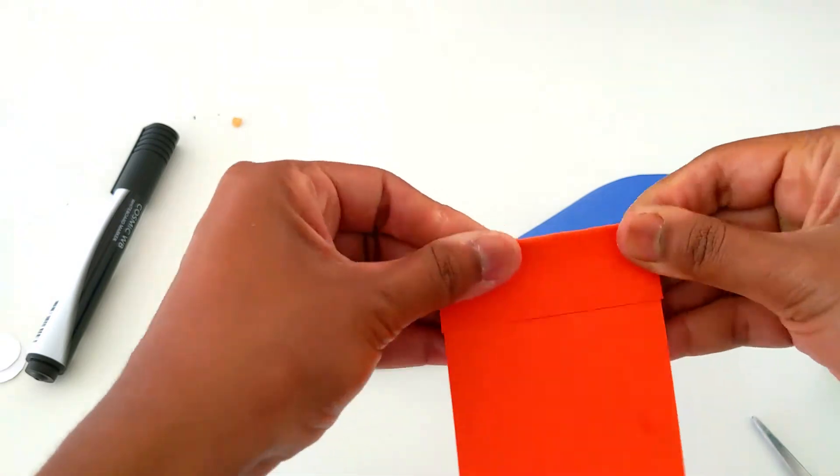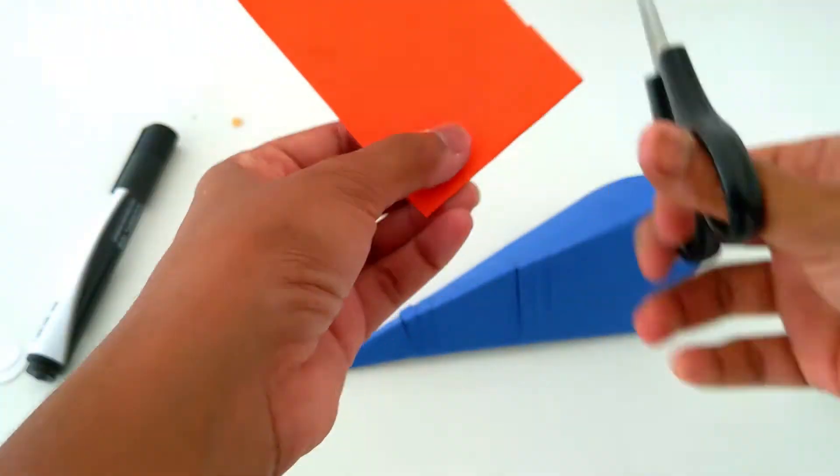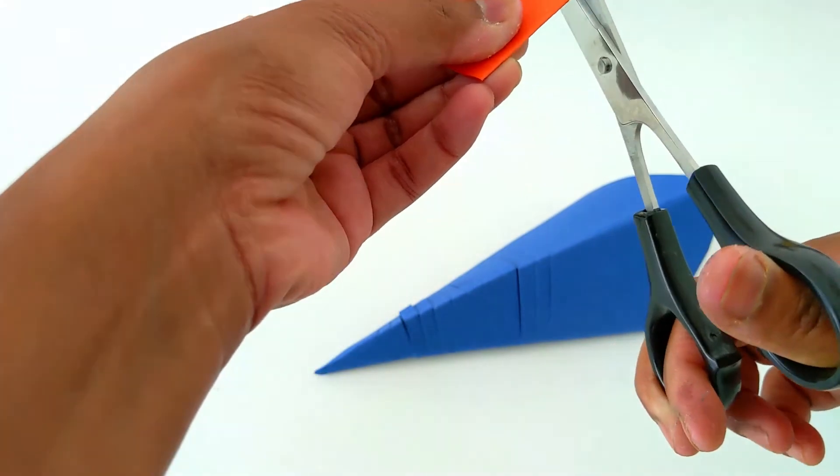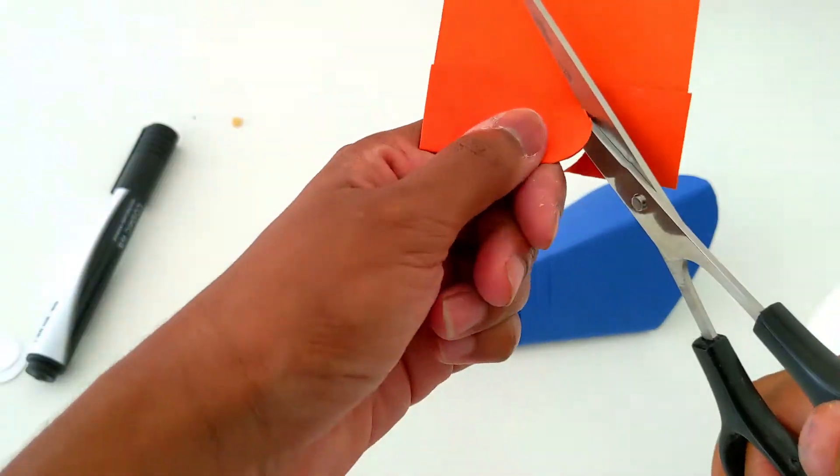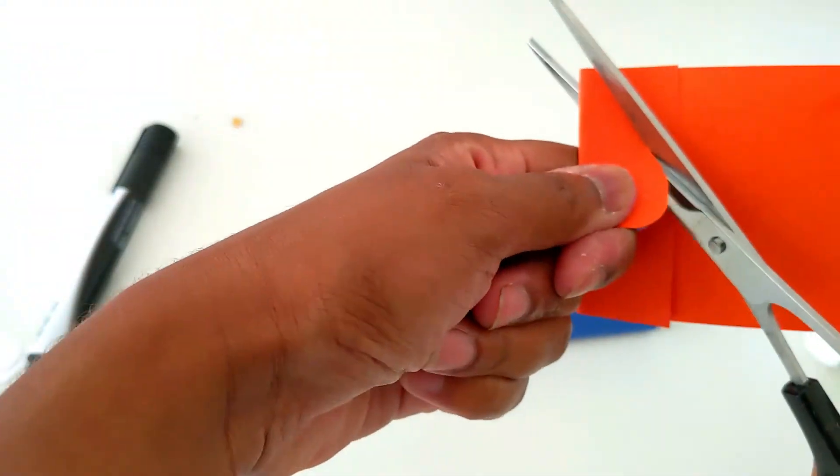I'm going to cut a heart. This heart shape will become the tail of our fish.